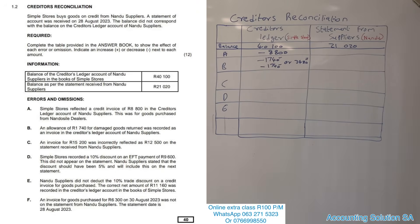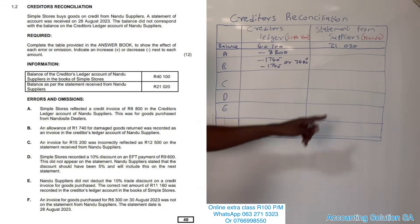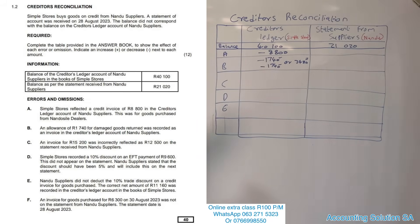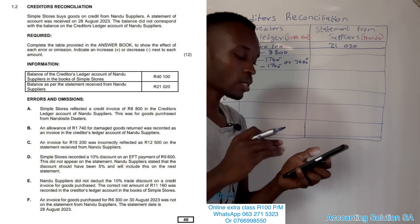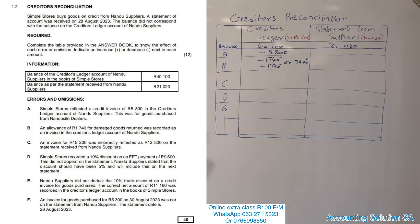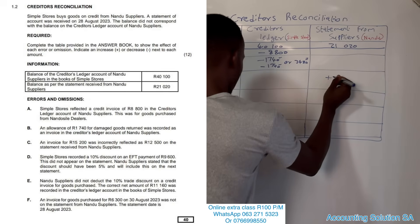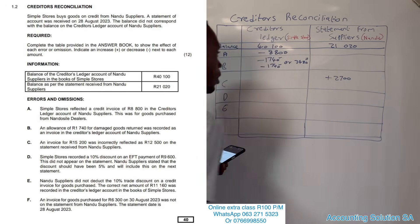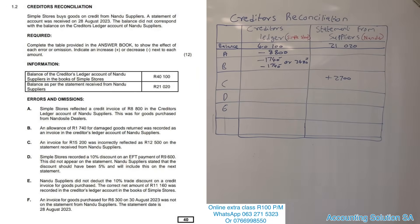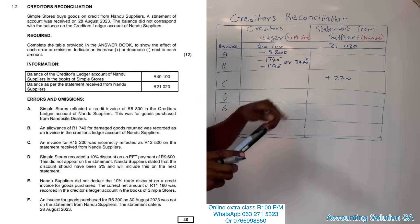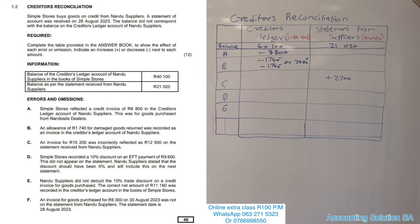Number C: An invoice of goods purchased for 15,200 was incorrectly reflected as 12,500 on the statement. The supplier made the mistake — they recorded less instead of more. To correct it, we calculate the difference: 15,200 minus 12,500 equals 2,700. We add 2,700 to the supplier's side so that 12,500 plus 2,700 goes back to the correct amount of 15,200.